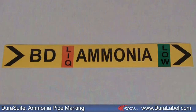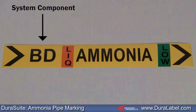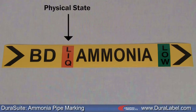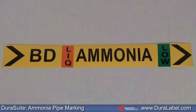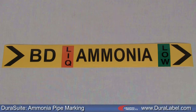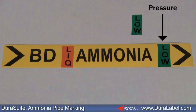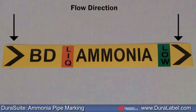An ammonia pipe marker looks like this. The system component abbreviation is located here, followed by the physical state of the contents — whether they're liquid, vapor, or both. The marker body contains the word ammonia. Here is the pressure level, either high or low. Lastly, the flow direction of the system contents is indicated with arrows.